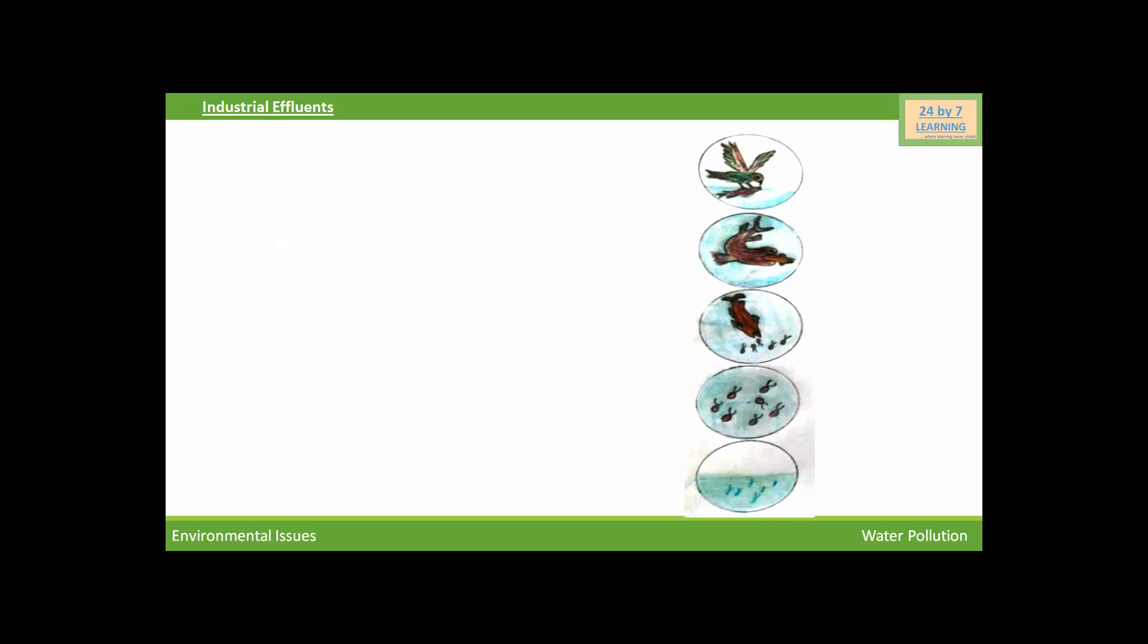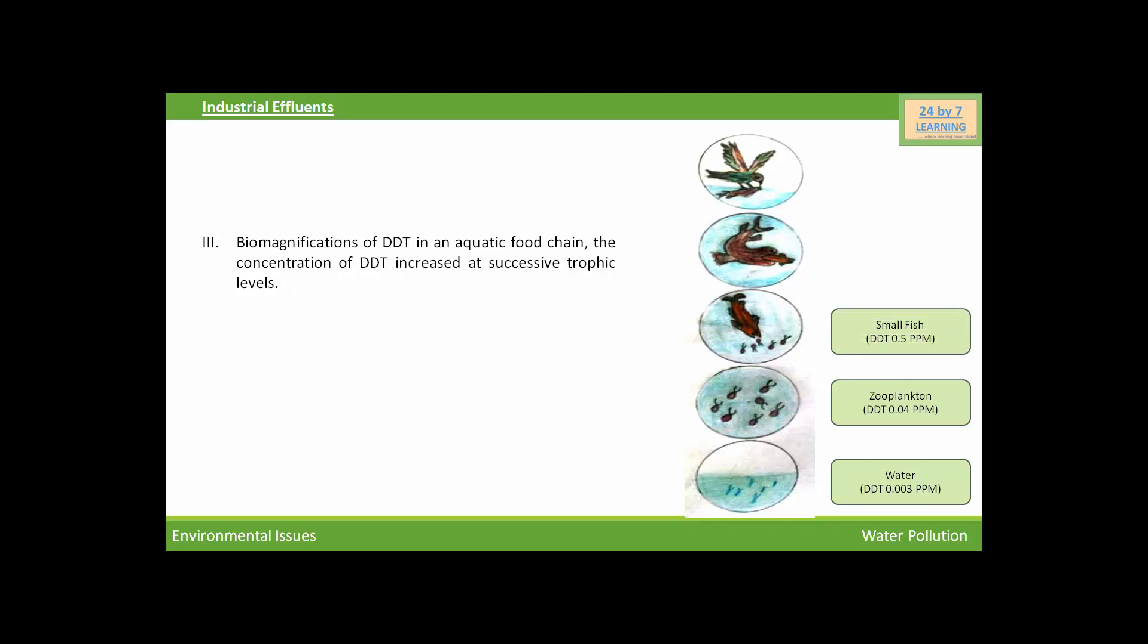This phenomenon is well known for DDT and other heavy metals. This picture shows biomagnification of DDT in an aquatic food chain. In water, DDT is 0.003 ppm. In zooplanktons living in this water, DDT is 0.04 ppm. Small fish that eat these zooplanktons have 0.5 ppm of DDT. In large fish, it increases to 2 ppm, and ultimately in birds that eat these fish, DDT reaches 5 ppm.